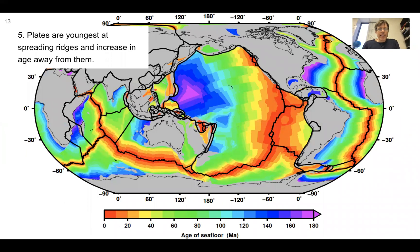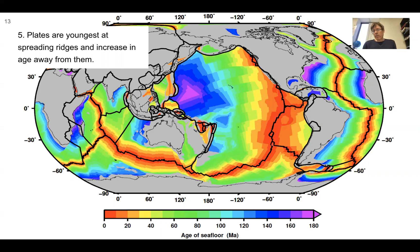Plates are youngest at the spreading ridges and increase in age away from them. The discovery of magnetic striping on the seafloor enabled scientists to map out the age of the entire ocean floor. The youngest material on the seafloor occurs by definition where the seafloor is spreading apart to make new material, so all the red areas are where divergent seafloor spreading is occurring.